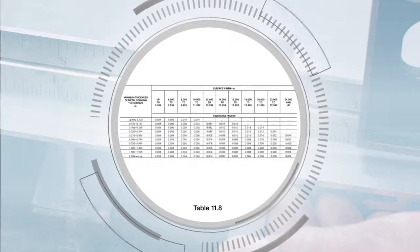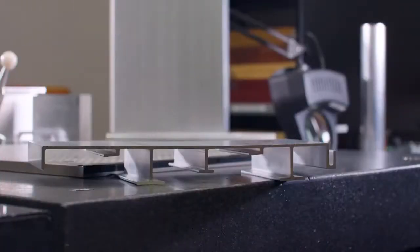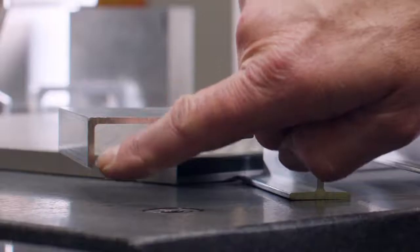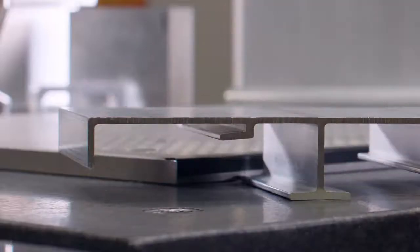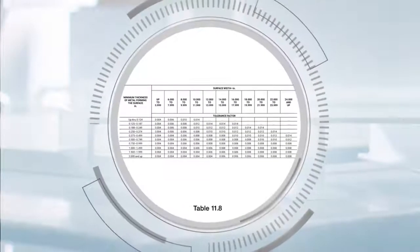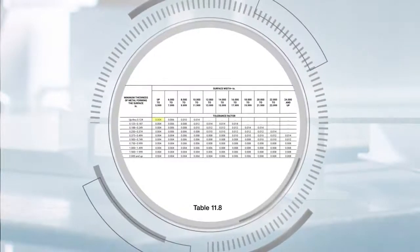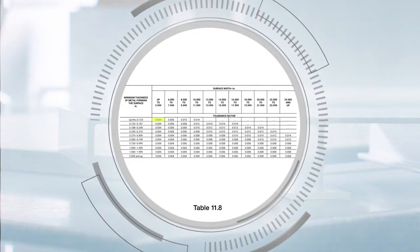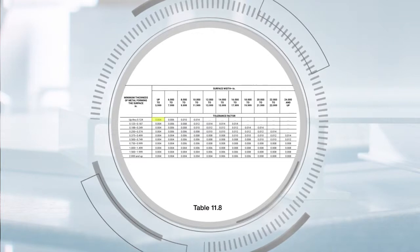Flatness can also be determined on smaller extrusions or extrusion features, such as a short leg on a profile with a surface width of less than one inch. In this case, the tolerance up through one inch will apply, which is 4 thousandths of an inch for solid profiles.